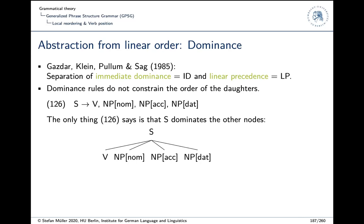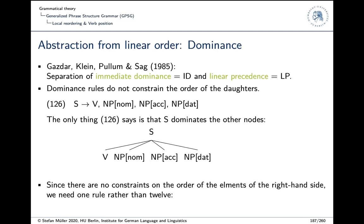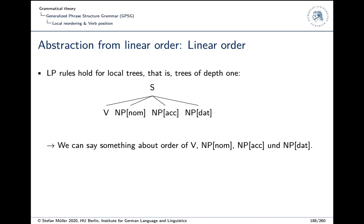We would have a rule like rule 126 that doesn't say anything about the order of elements on the right-hand side. The only thing it says is that the S node dominates a verb, NP-nominative, NP-accusative, and NP-dative — that's it. It's like a mobile where you have a top node and stuff hanging below it that can flow around freely. Because there are no order constraints, we have just one rule and we don't need 12.